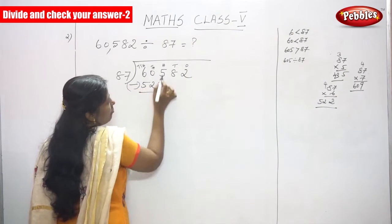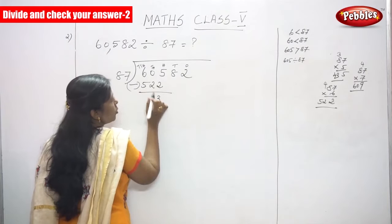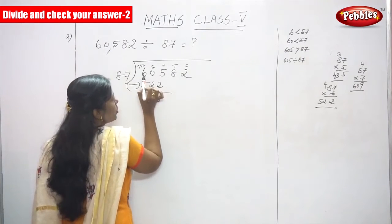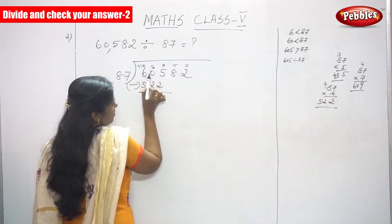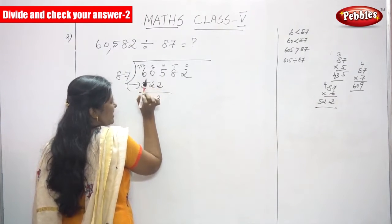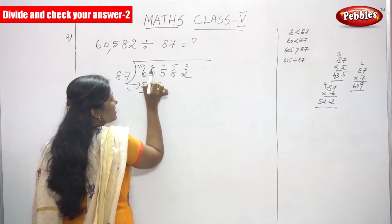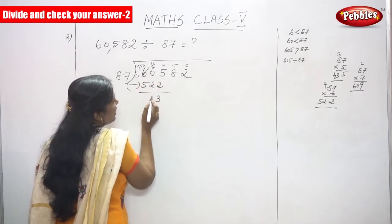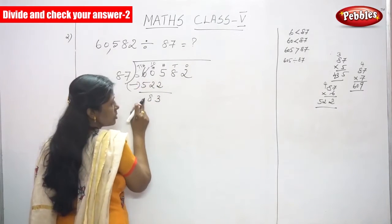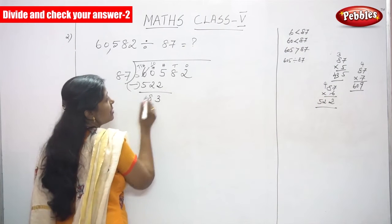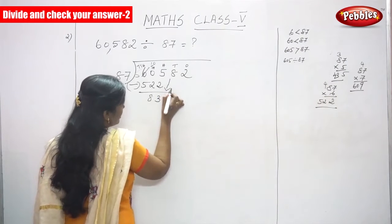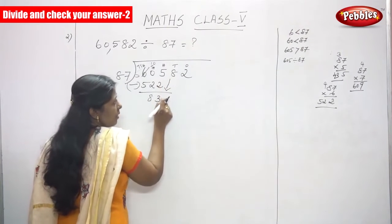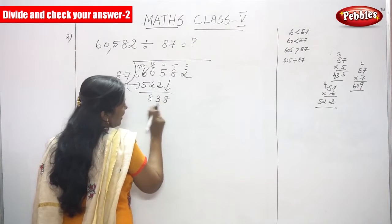Now we are going to subtract. 5 minus 2 is 3. 0 minus 2 — you can't subtract because 0 is a lesser number. So go to the before digit, that is 6. If you borrow from 6, it will become 10 and that becomes 5. So 10 minus 2 gives 8, and 5 minus 5 is 0. You have to bring down the next digit. 83 is less than 87, so bring down the next number: 838.